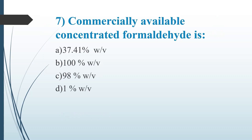Seventh question: Commercially available concentrated formaldehyde is. Option A, 37-41% weight per volume. Option B, 100% weight per volume. Option C, 98% weight per volume. Option D, 1% weight per volume. Answer is Option A, 37%.